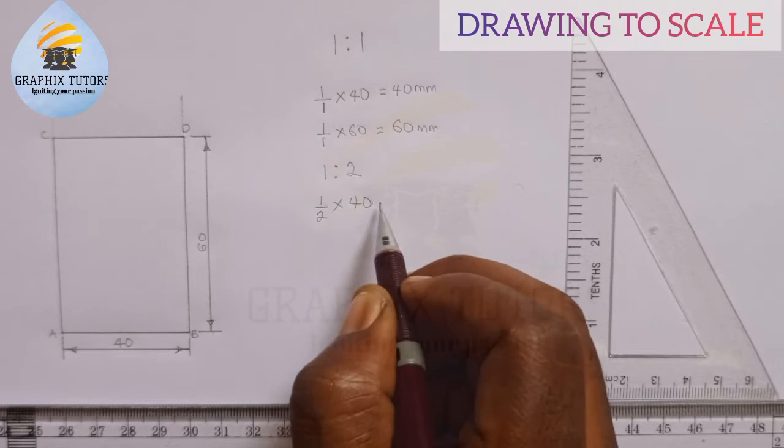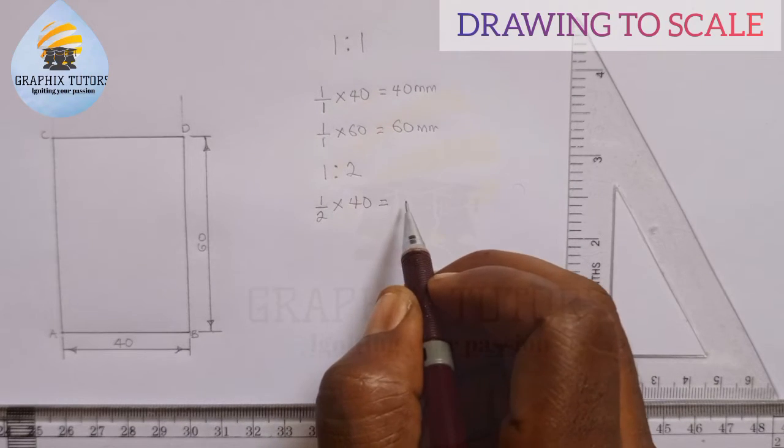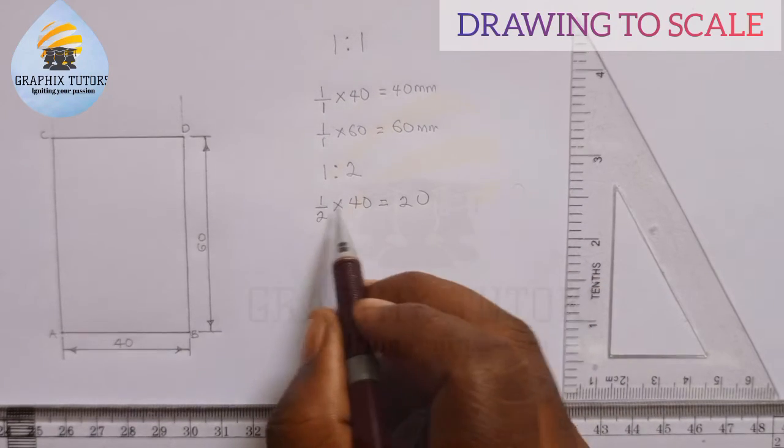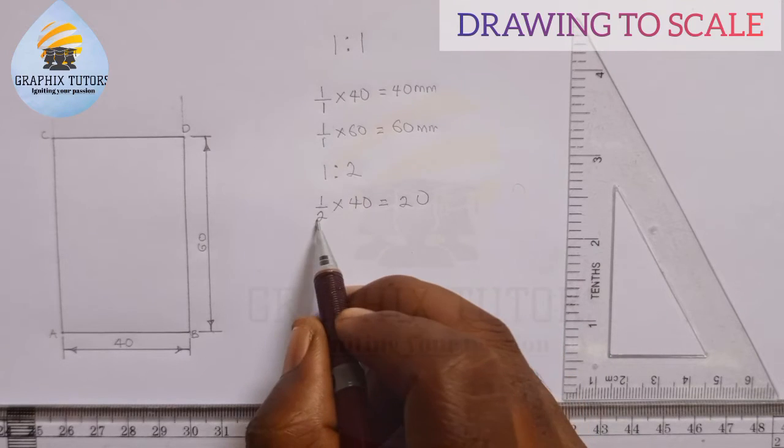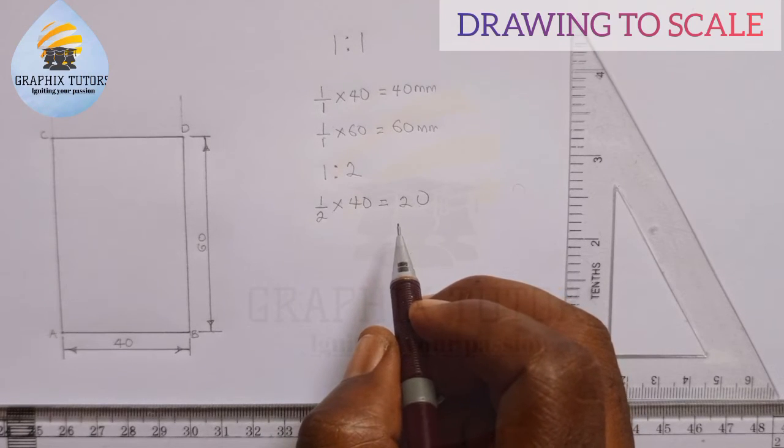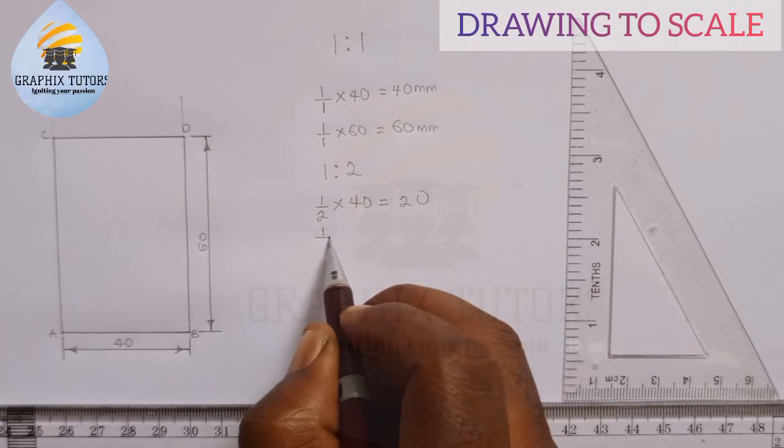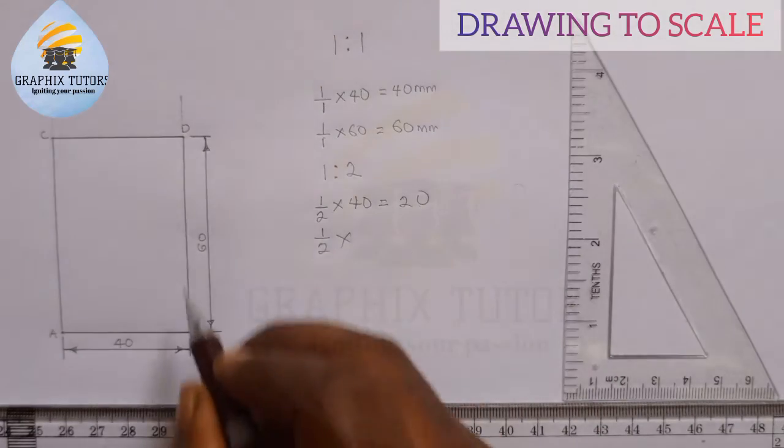So it means one over two of 40, and that will give us 20, because one times 40 is 40 divided by two is 20.